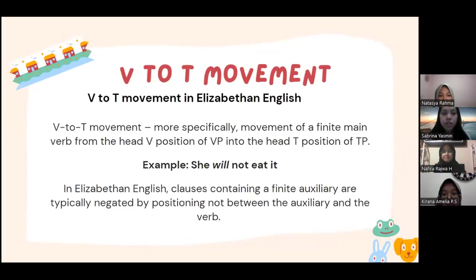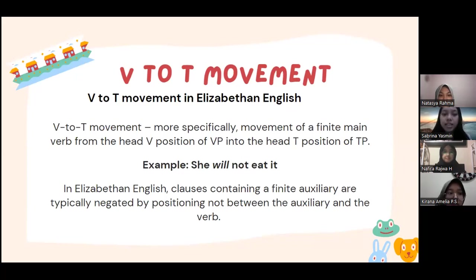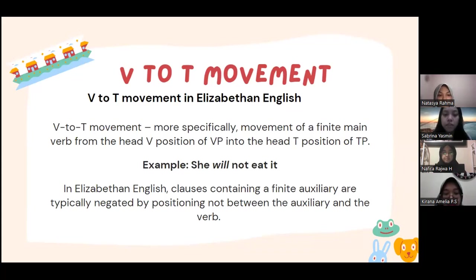The first material we will discuss is V to T movement. V to T movement, more specifically, is the movement of a finite — meaning verb — from the V position of VP into the T position of TP. The example chosen here is: she will not eat it.